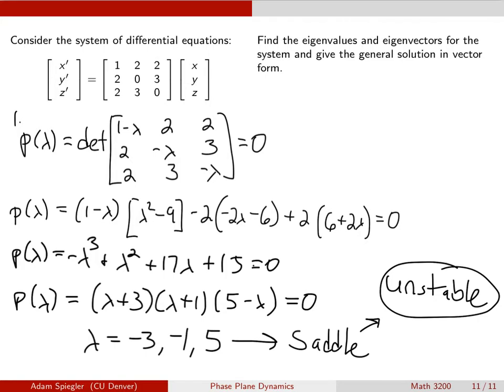Now that we've got our eigenvalues, let's go ahead and find the corresponding eigenvectors for each of these, and then give our general solution in vector form.